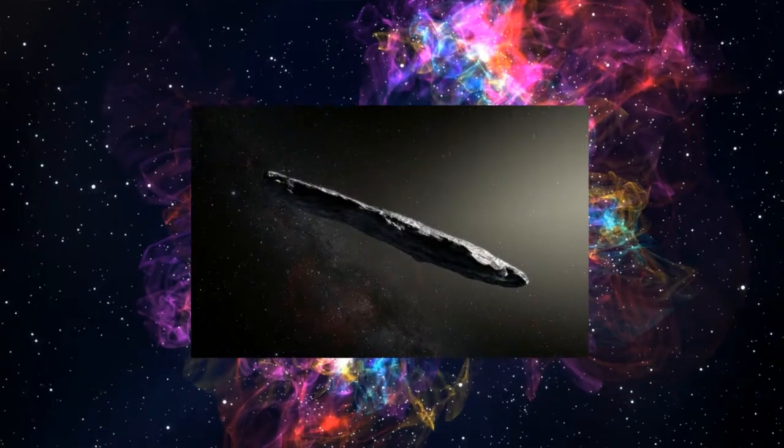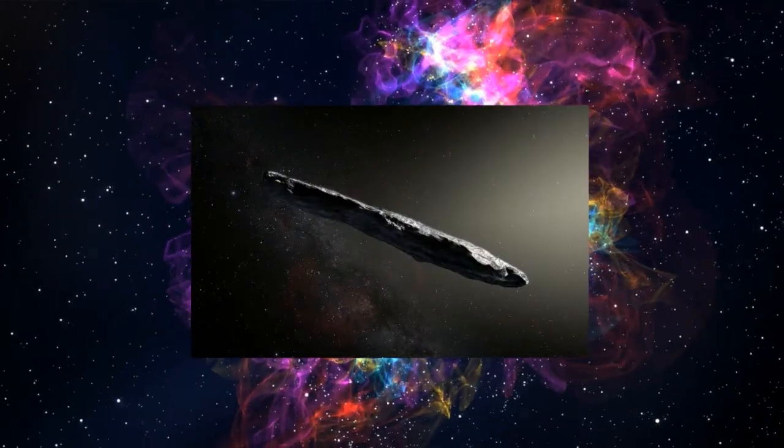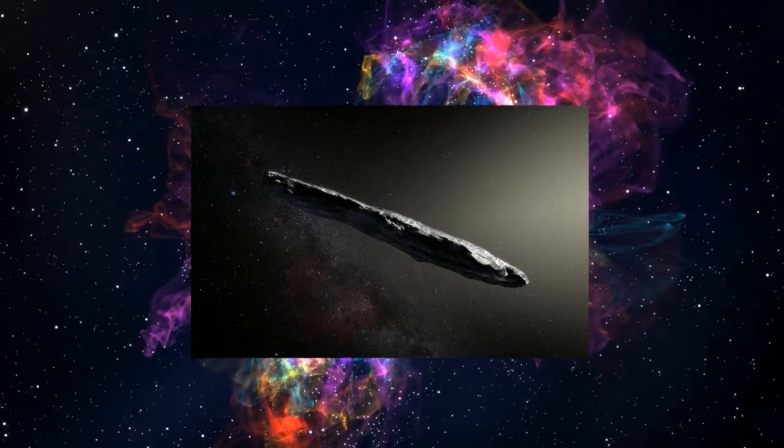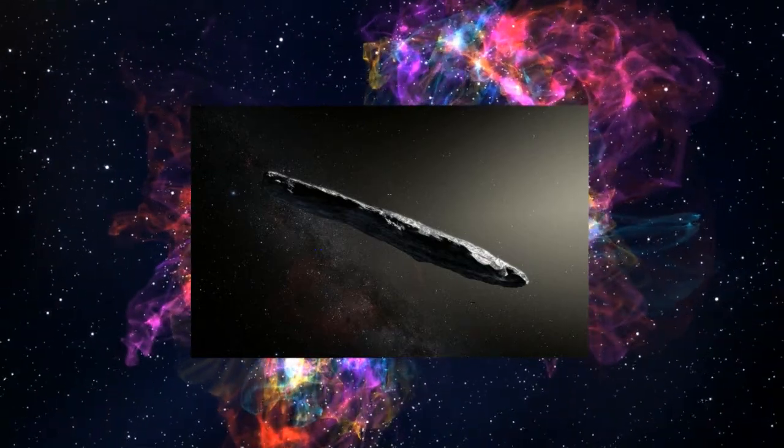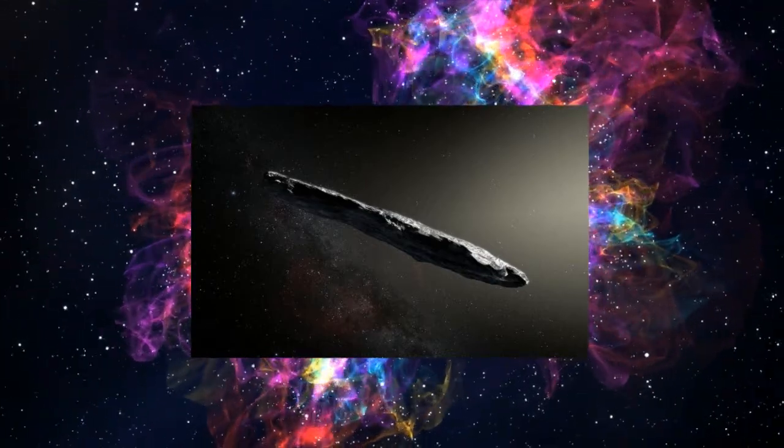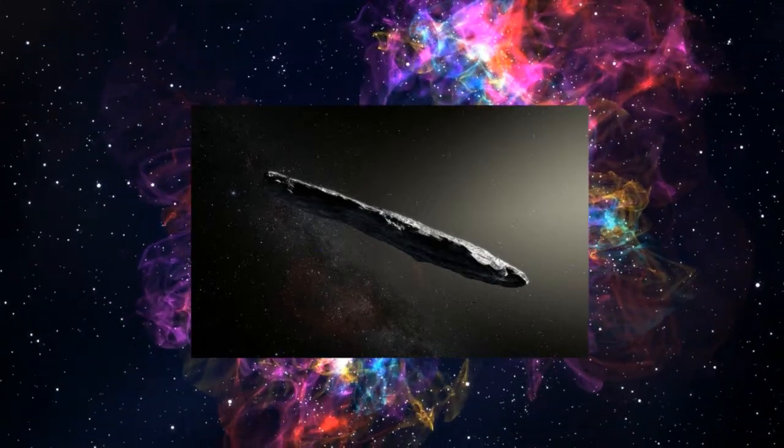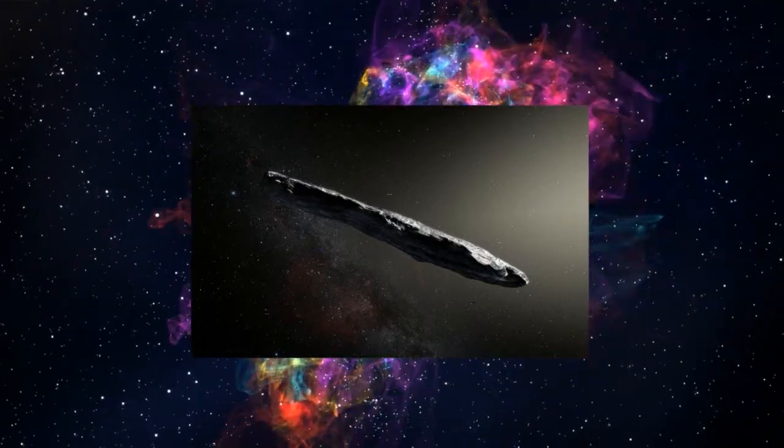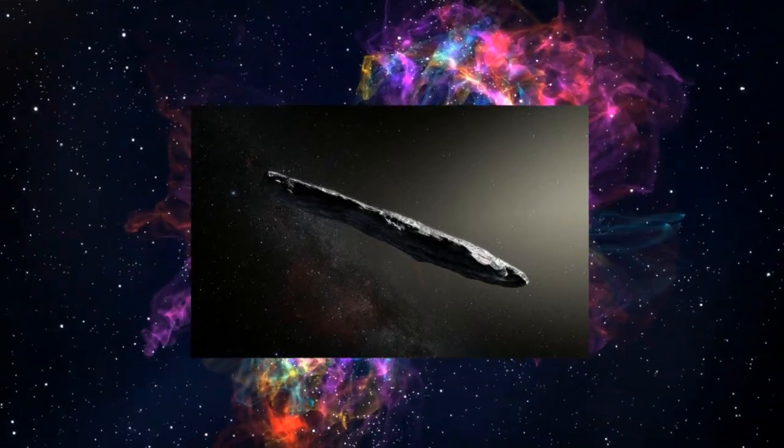For our first story today, Oumuamua is making headlines once again. You may recall that back in 2017, our solar system had its very first interstellar visitor, dubbed Oumuamua by astronomers, meaning scout or distant messenger. Believed initially to be a comet, then an asteroid, then who knows what.